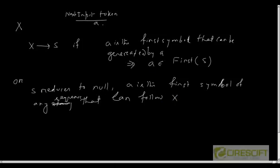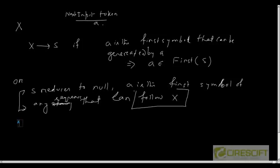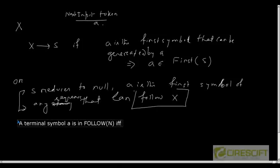The first part is clear since we have introduced the FIRST function. To clarify the second part, we need another function called FOLLOW(X). A terminal symbol 'a' is in FOLLOW(N), where N is a non-terminal — FOLLOW(N) returns a set of symbols — if and only if there is a derivation from the start symbol S of the grammar.